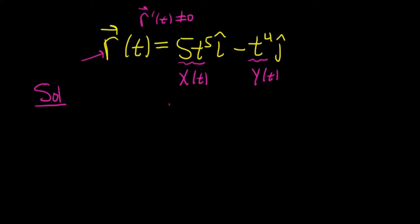Basically, we take the derivative of each and we set them both equal to zero. So we look for when they're both equal to zero. When they're both equal to zero, those are the t values where it's not smooth.